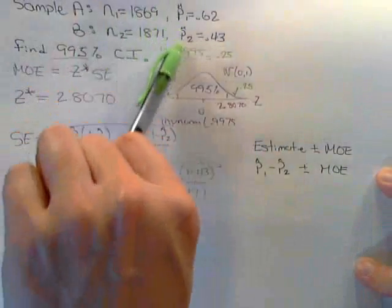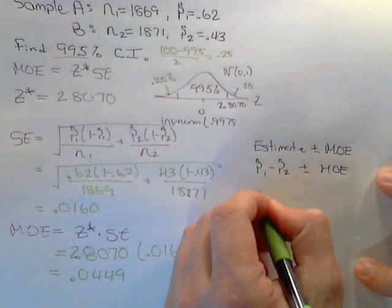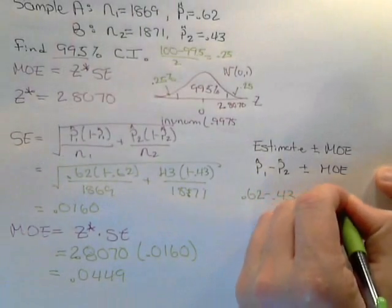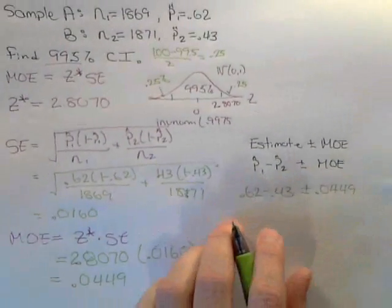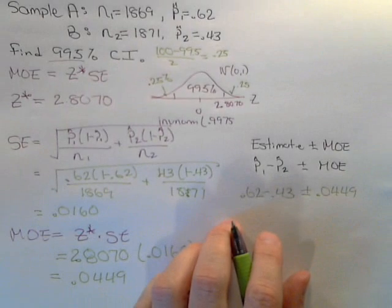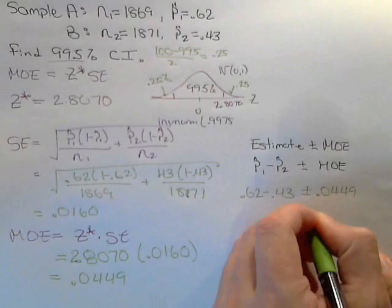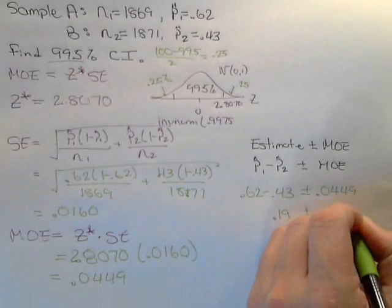So in this situation the sample proportion is 0.62 minus 0.43 plus or minus the margin of error, 0.0449. 0.62 minus 0.43 is 0.19 plus or minus 0.0449.